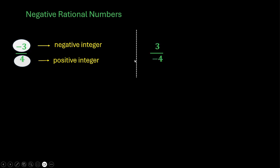Let us look at one more number, 3 upon minus 4. In this case, the denominator is negative. We always try to make the denominator positive. If I want to do that, I will multiply it by minus 1. But if I multiply it by minus 1, I will have to multiply the numerator with minus 1 as well. So, this becomes minus 3 upon 4.